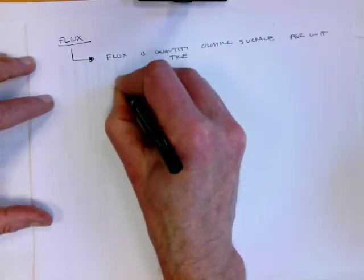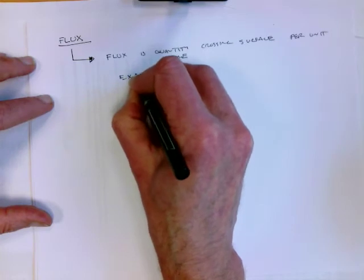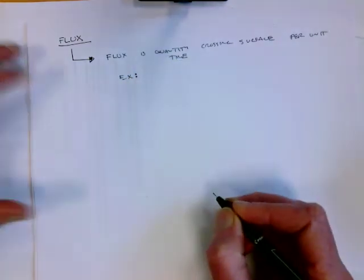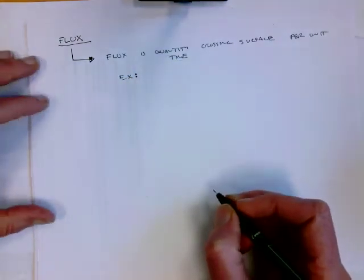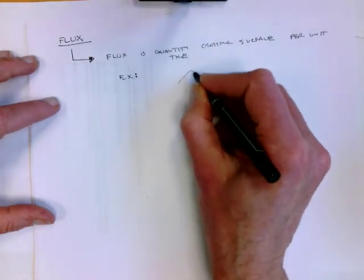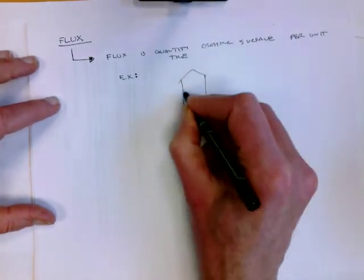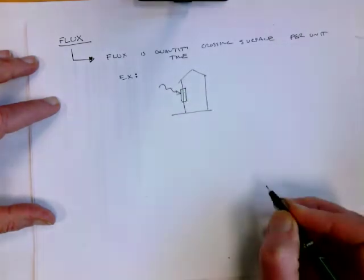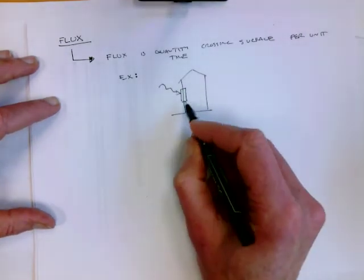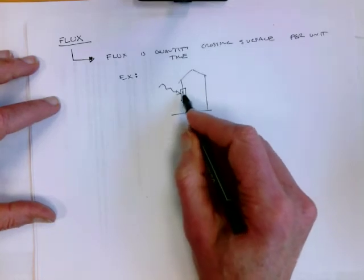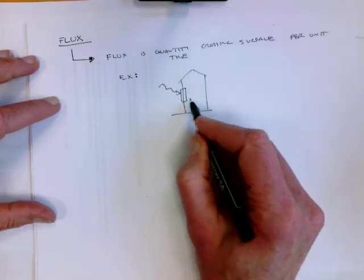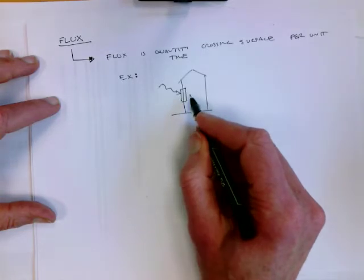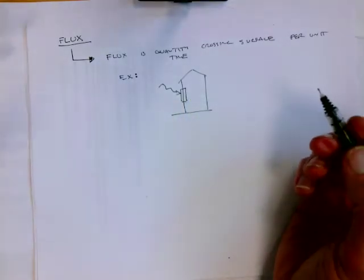To give you a couple of examples, I could talk about what the flux of energy was across a surface. If I have a house and a window, I could imagine the sun is shining through that window, and I could talk about the amount of energy per unit time going through that window. In other words, I could talk about an energy flux or a power through the window.